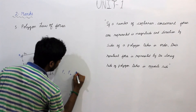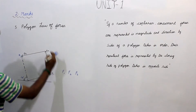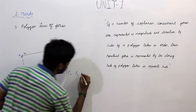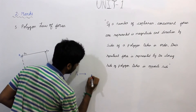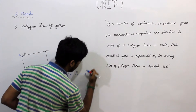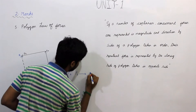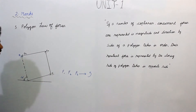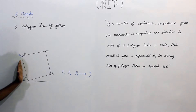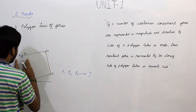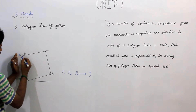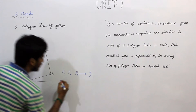F1, F2, F3 — they are acting in an orderly manner, that is in anticlockwise direction. The resultant force is represented by the closing side of the polygon taken in the opposite direction. So if the resultant force R, it is rotating in clockwise direction.